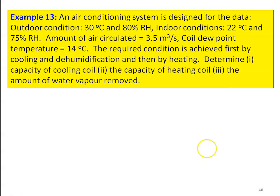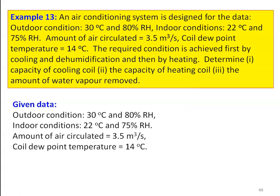Example number 13: An air conditioning system is designed with the following data. Outdoor conditions are 30°C and 80% relative humidity. Indoor conditions required are 22°C and 70% relative humidity. Amount of air circulated is 3.2 m³/s. Coil dew point temperature is 14°C. The required condition is achieved first by cooling and dehumidification, then by heating. Determine: capacity of the cooling coil, capacity of the heating coil, and the amount of water vapor removed.